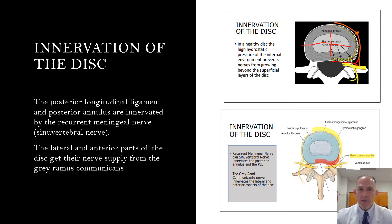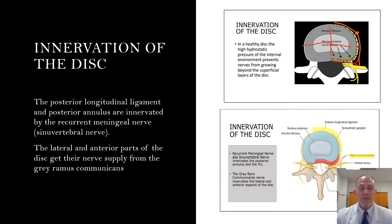With a disc that herniates, reduction of proteoglycan and changes in oxygen content, glucose content, and proteoglycan production all reduce hydrostatic pressure in the disc. The injured disc eventually allows for nerve ingrowth from the outer one third into the center, and that produces significant pain for many patients.